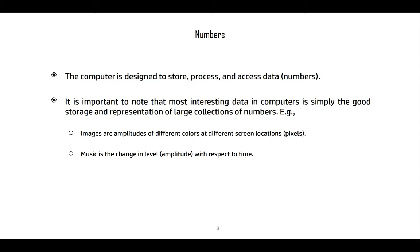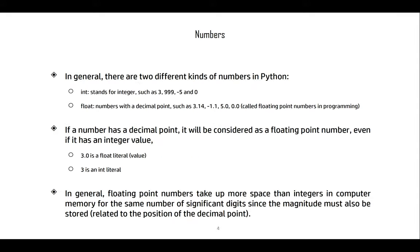Images are large collections of numbers—they're actually amplitudes of different colors at different screen locations (pixels). Music is a change in level amplitude with respect to time, and that's also represented as numbers in time.